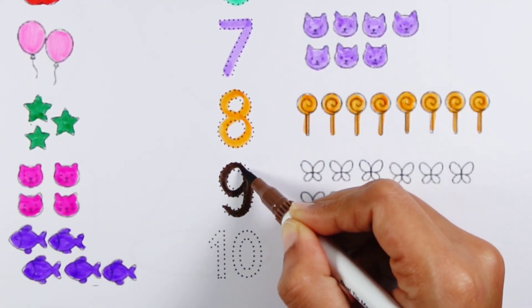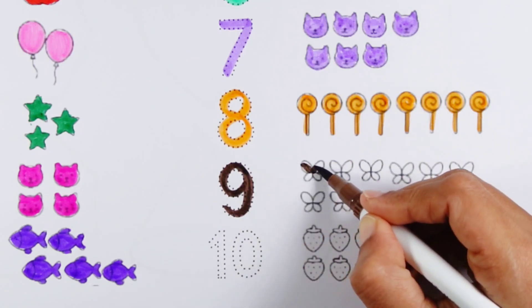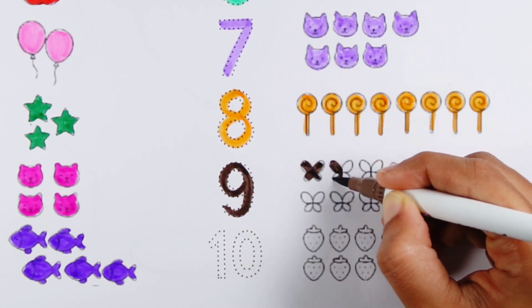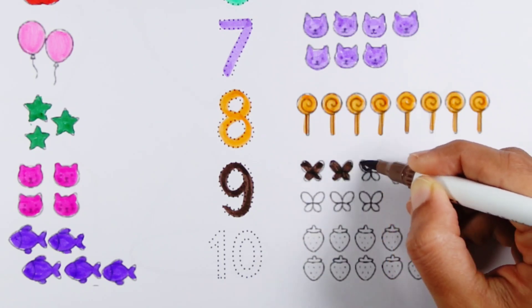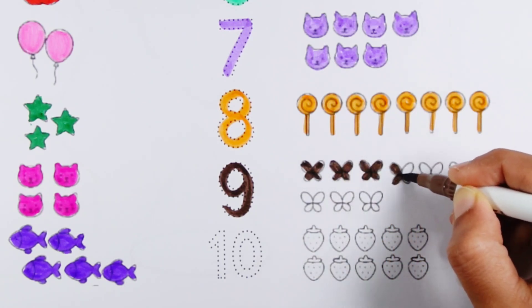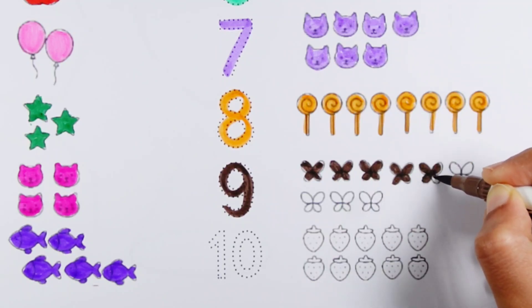Number nine. One, two, three. One, two, three, four, five, six, seven, eight.